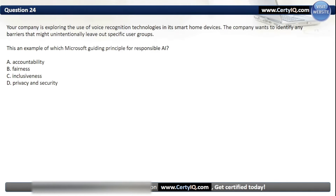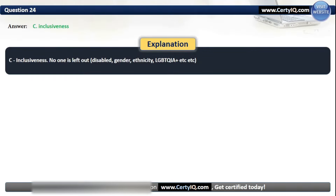Question 24. Your company is exploring the use of voice recognition technologies in its smart home devices. The company wants to identify any barriers that might unintentionally leave out specific user groups. This is an example of which Microsoft guiding principle for Responsible AI? Options: A. Accountability, B. Fairness, C. Inclusiveness, or D. Privacy and Security. The correct answer is C. Inclusiveness — no one is left out.